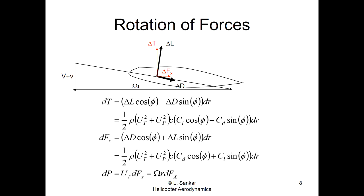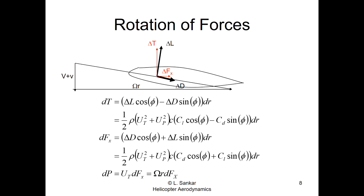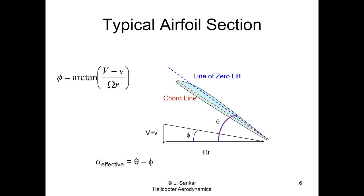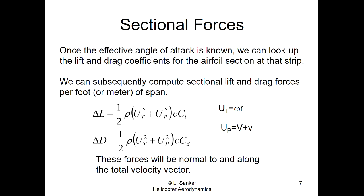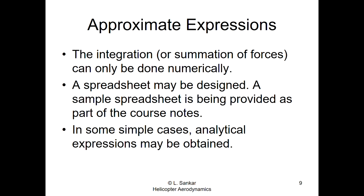Now you can integrate dT and multiply by the number of blades to get total thrust, and integrate dP from root cutout to tip and multiply by number of blades to get total power. This integration is done numerically in the general case because chord is a numerical value, Cl and Cd come from table lookup, and phi is numerically computed. We will use a spreadsheet-based approach for homework number two.